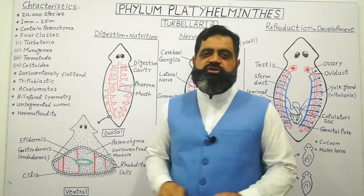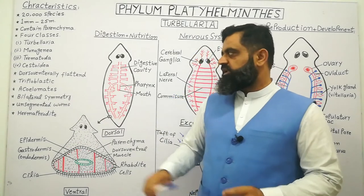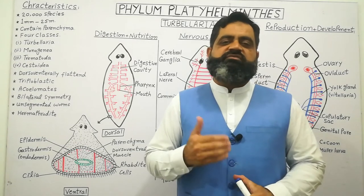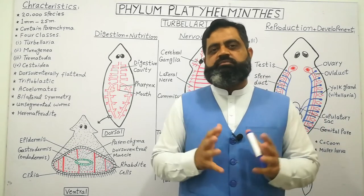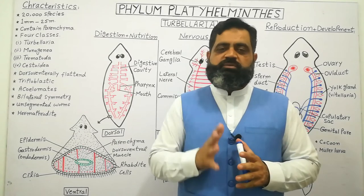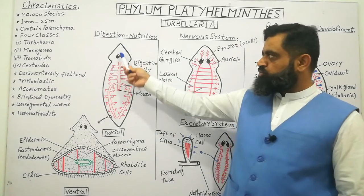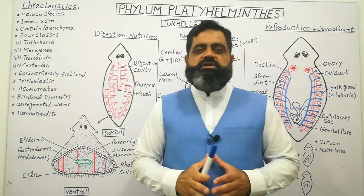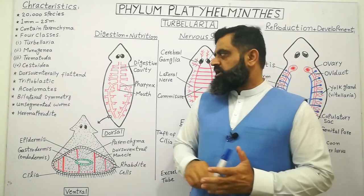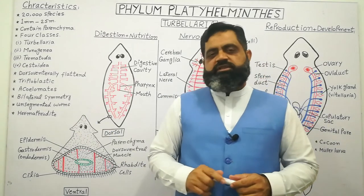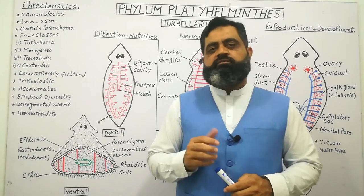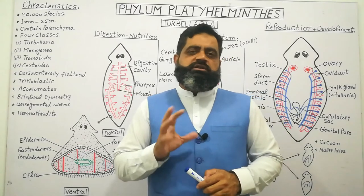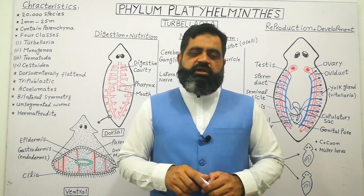They are acoelomates because they do not have a body cavity. They are bilaterally symmetrical — bilateral symmetry means those animals which can be divided into two equal halves that are mirror images of each other in only one plane. These are unsegmented worms and they are hermaphrodite. Hermaphrodite means they have both sexes in the same animal and they are also known as monoecious. These are the major characteristics of Phylum Platyhelminthes.